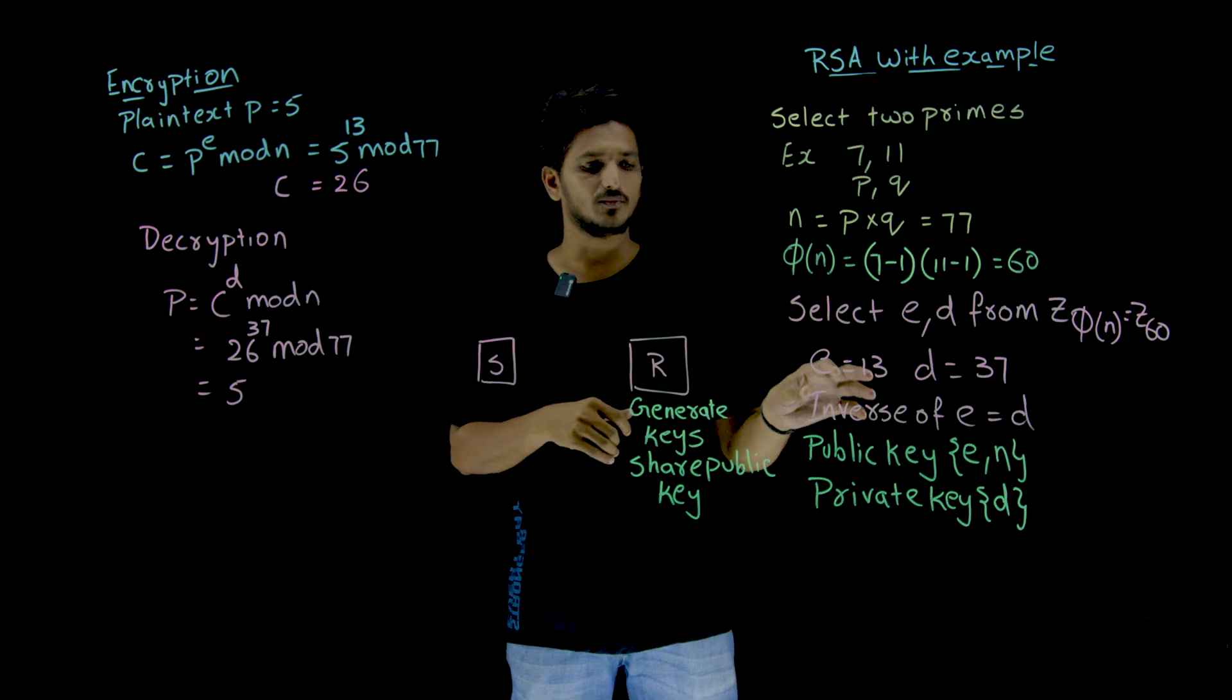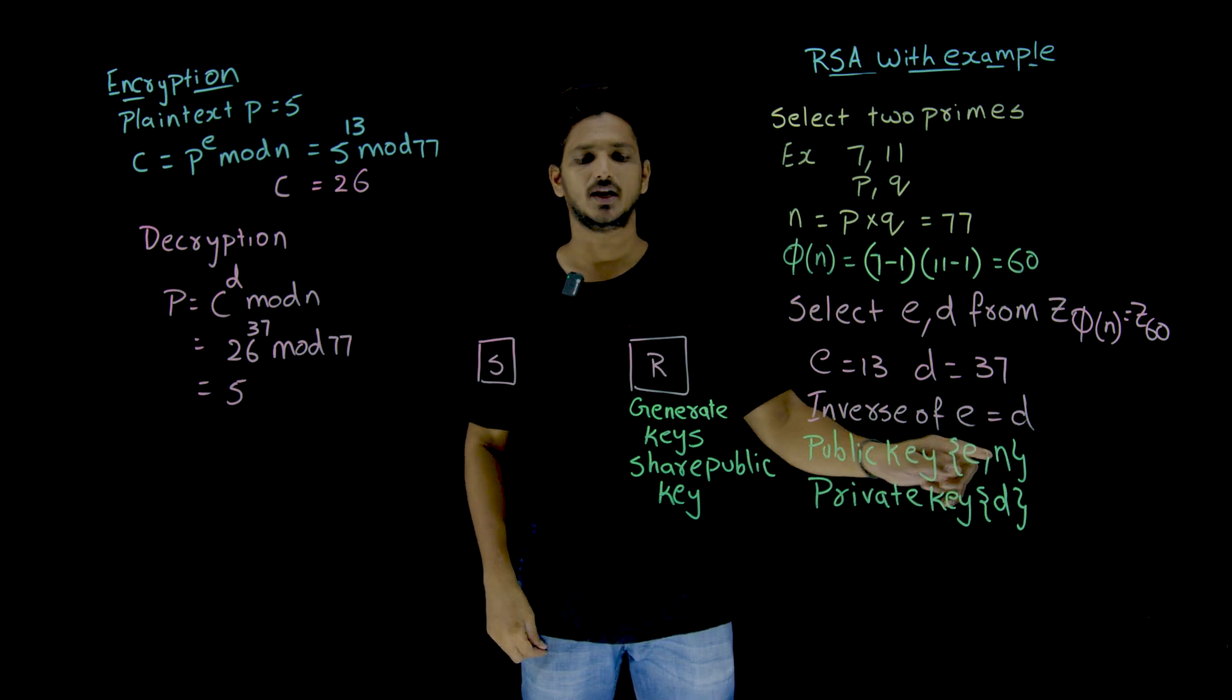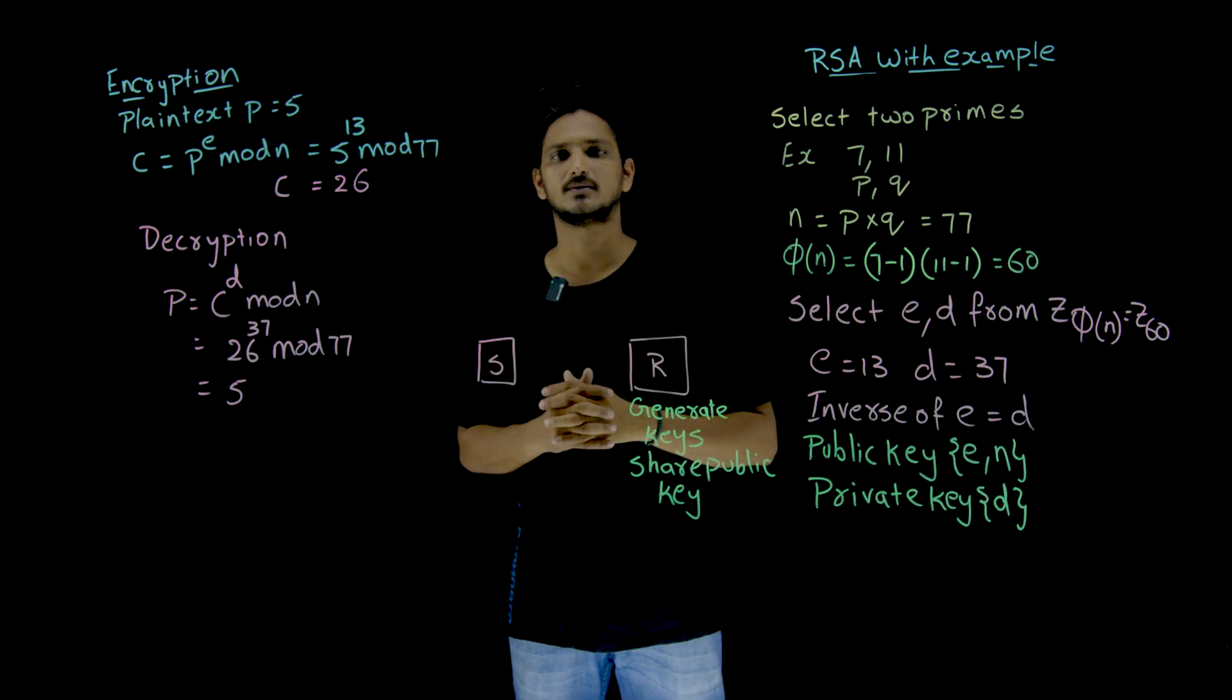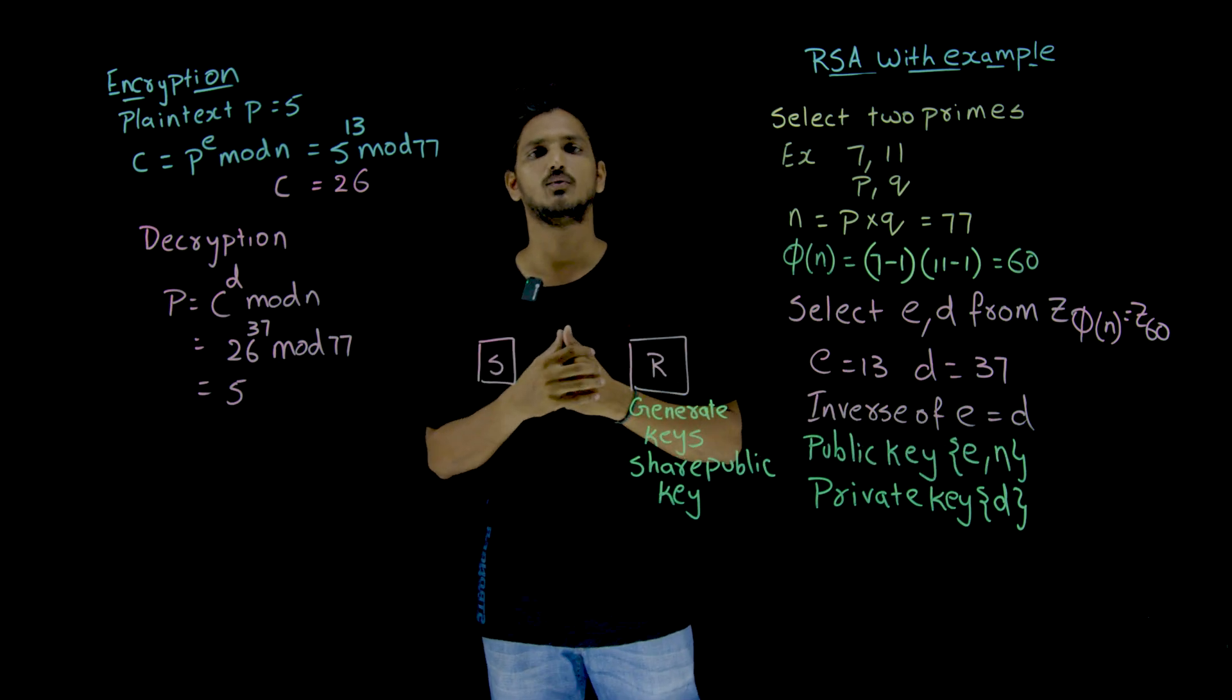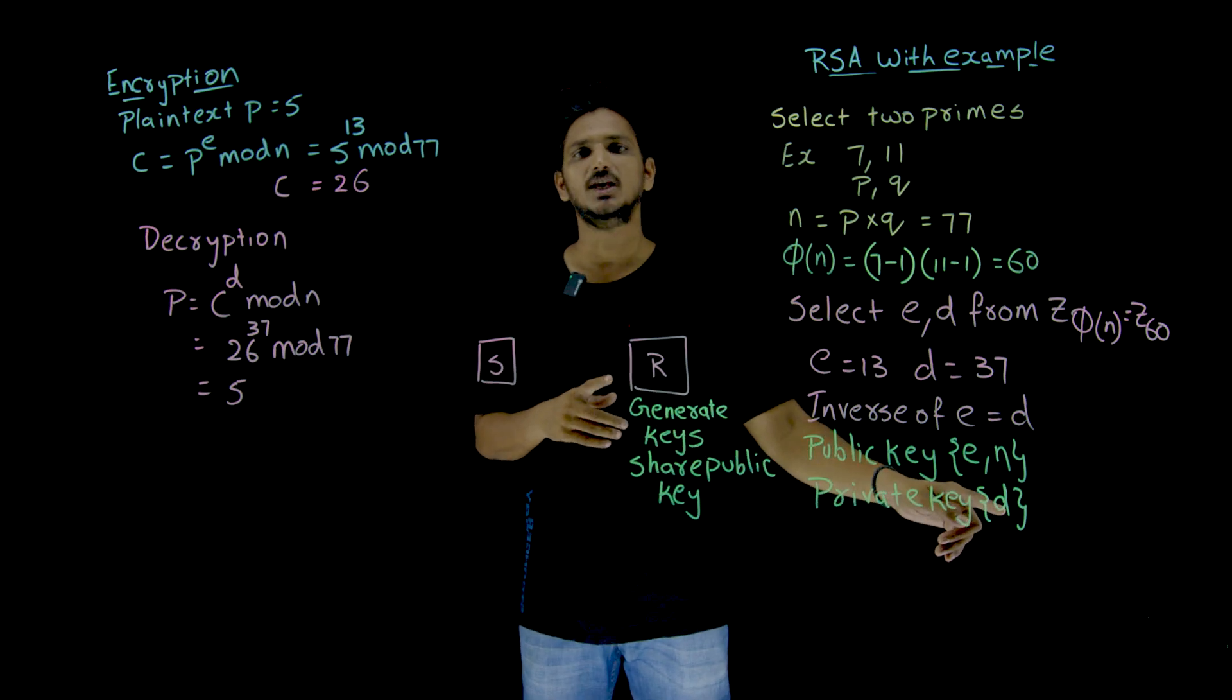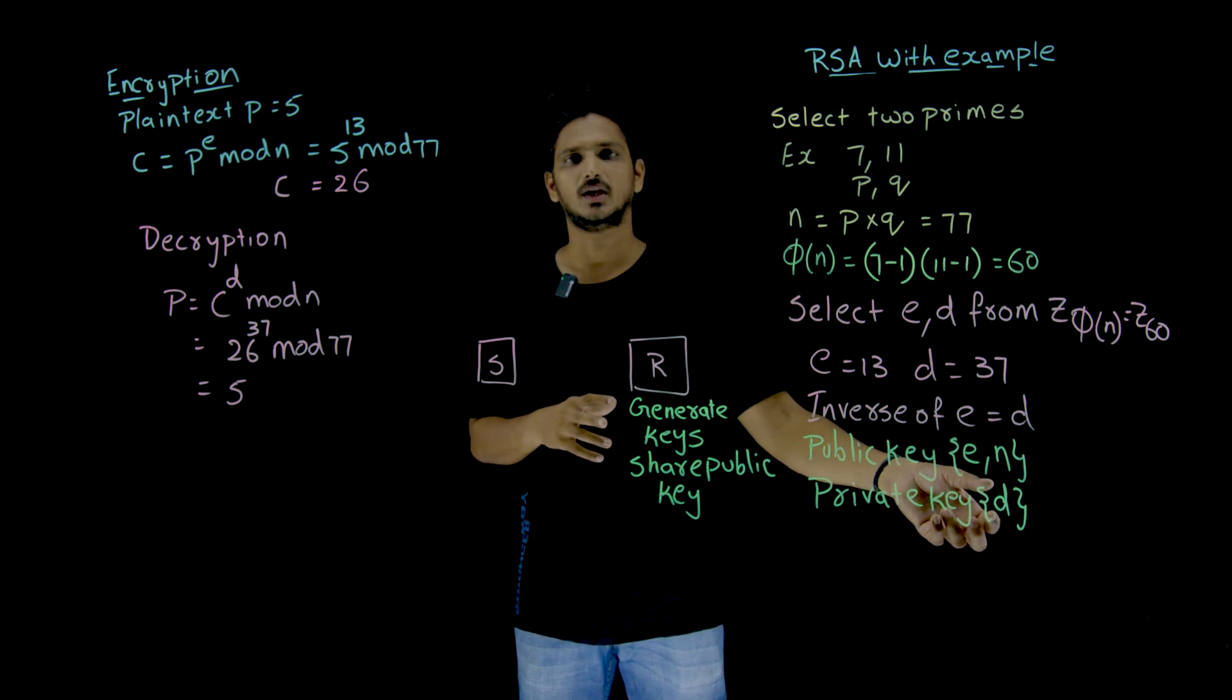So from now, the public key is considered as (E, n). This receiver is going to send the public key to all the senders. (E, n) is sent to all of them. It is open, it is public. Anyone can see it. And the private key here is D. The inverse value is taken as private key.